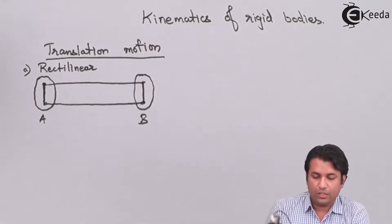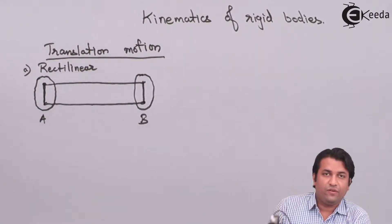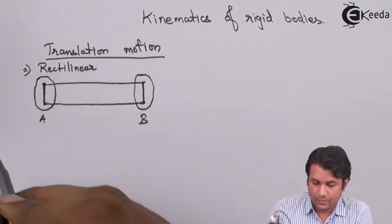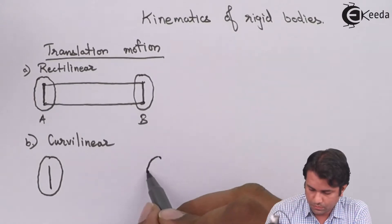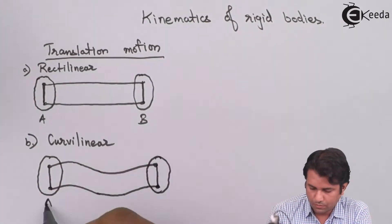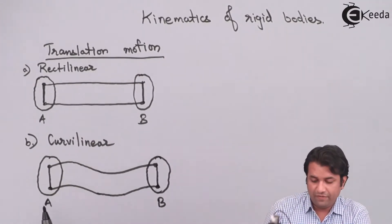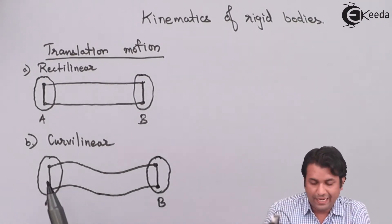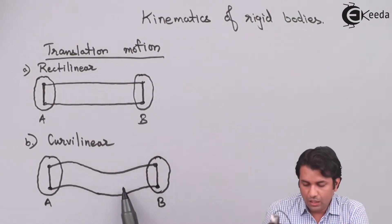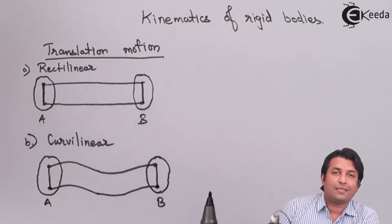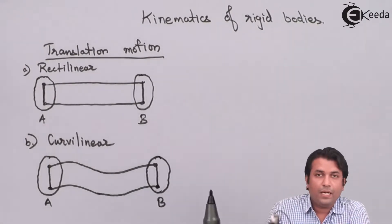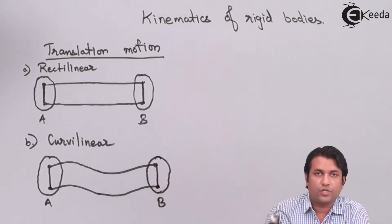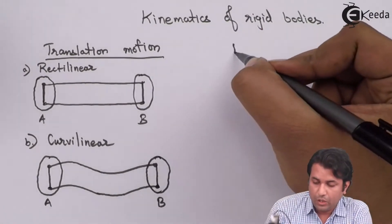The next is curvilinear translation motion, in which the orientation of the line does not change but the body moves along a curved path. The body travels from A to B along a curve, and the reference line AB still remains vertical throughout. This is pure translation motion — moving from A to B without any rotation. If the orientation of the line changes, that falls under rotational motion.